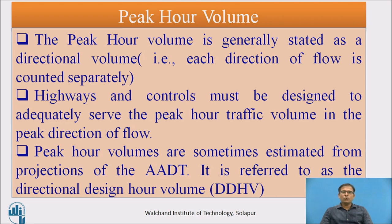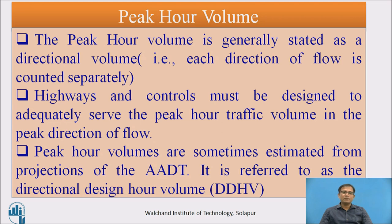Highway controls must be designed to adequately serve the peak hour traffic volume in the peak direction of flow. How do we calculate peak hour volumes? Taking the highest hourly volume is uneconomical; taking the lowest is also uneconomical; taking the average is inadequate. So the design peak hour is usually estimated from a projection of the AADT — referred to as DDHV, the Directional Design Hourly Volume.